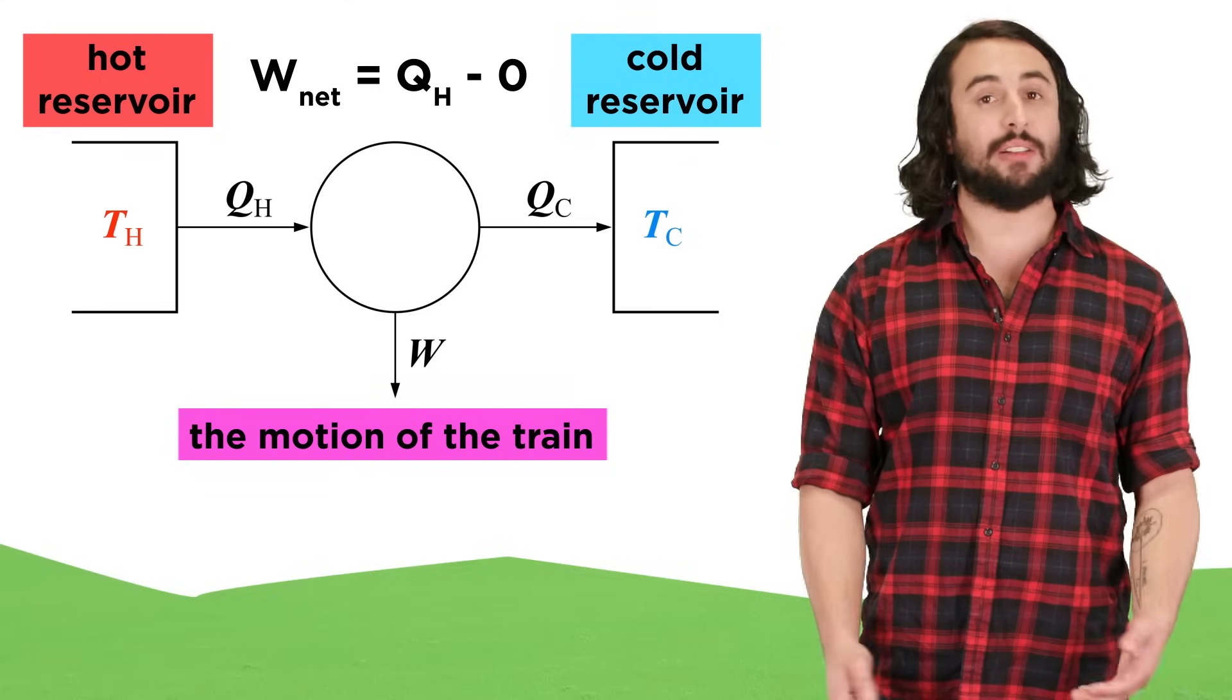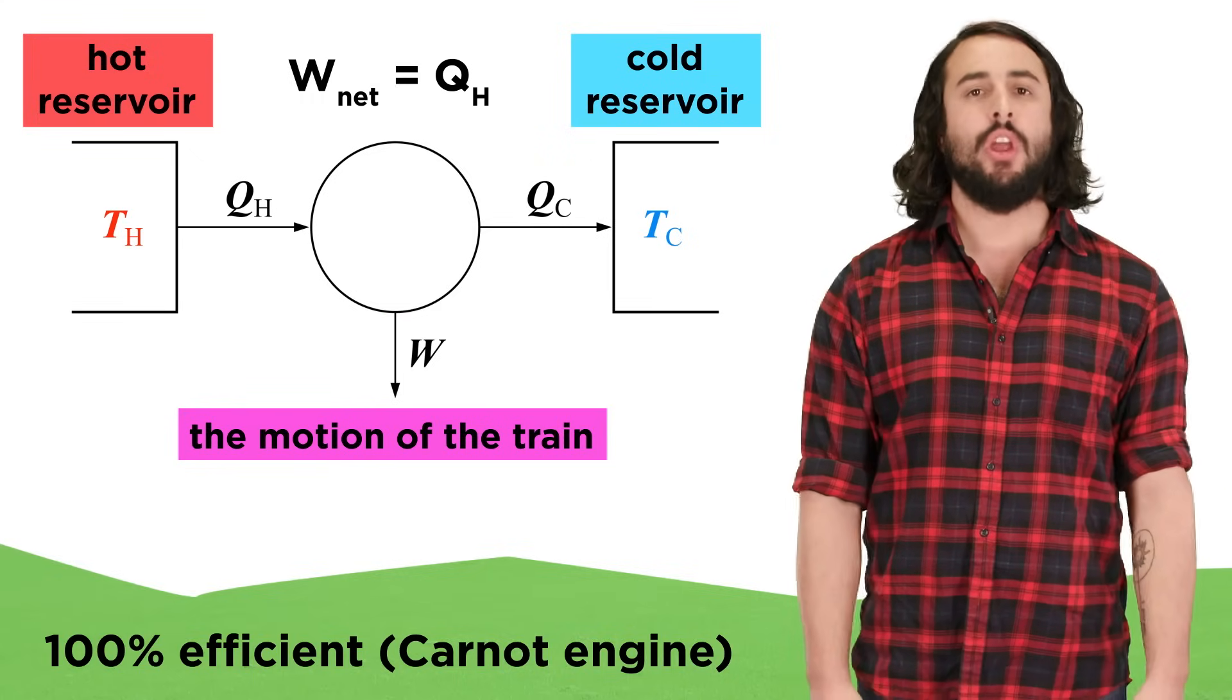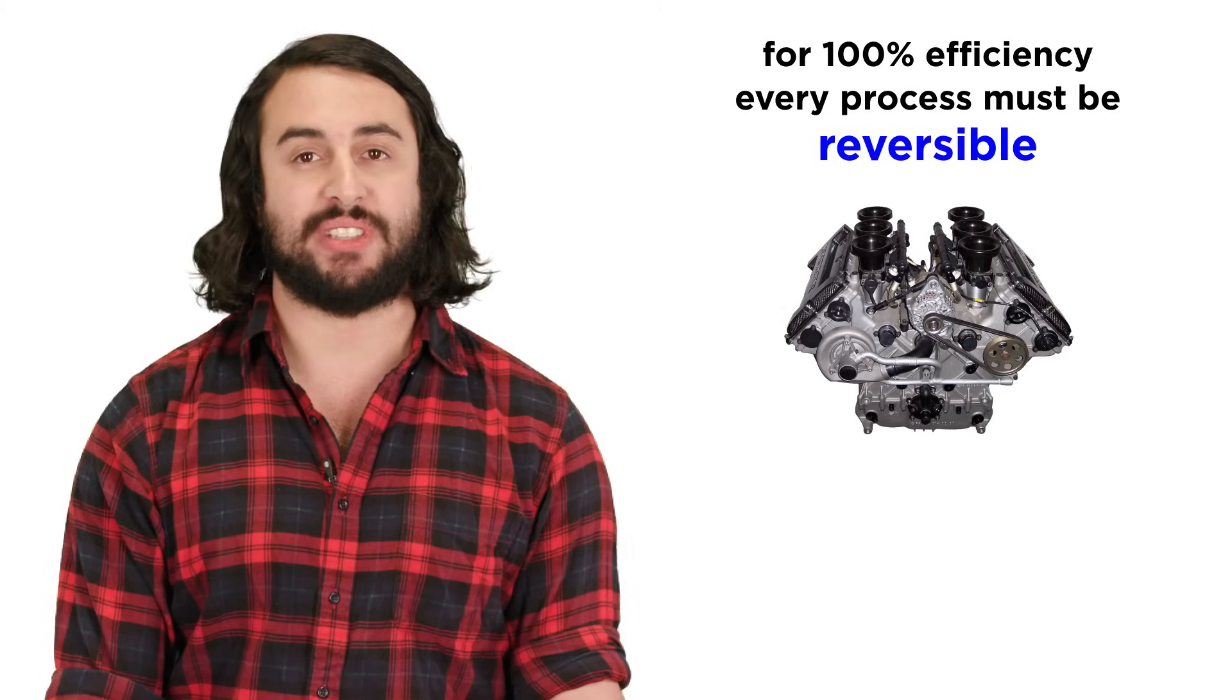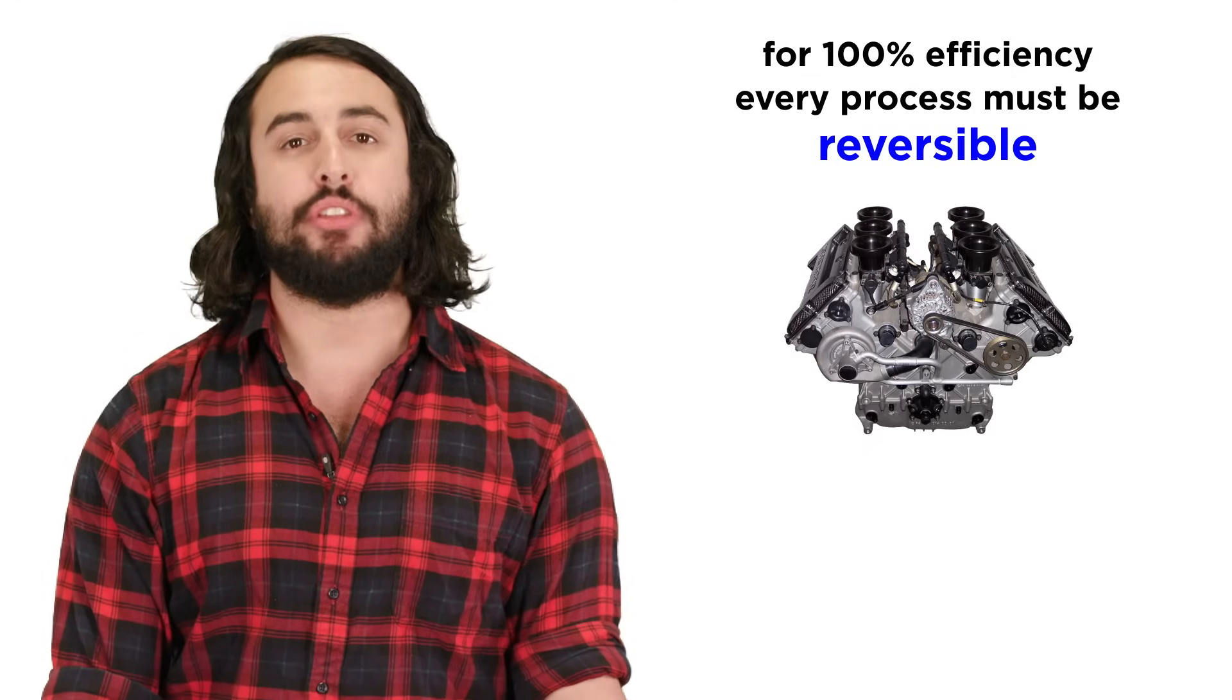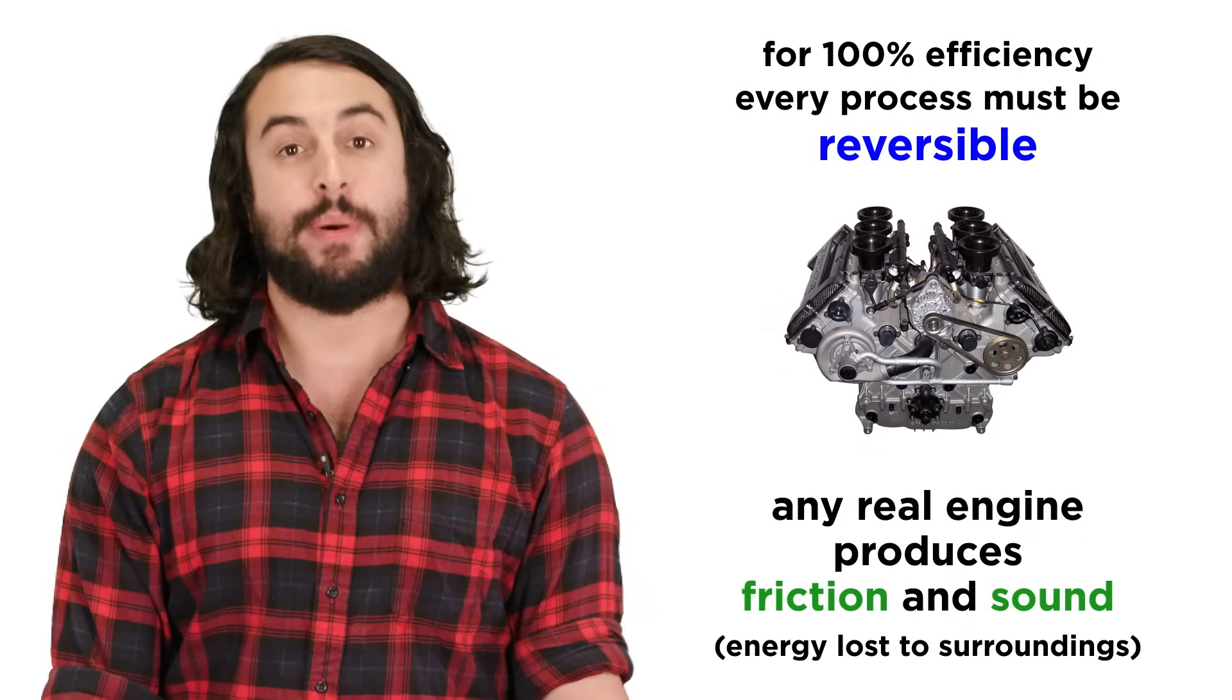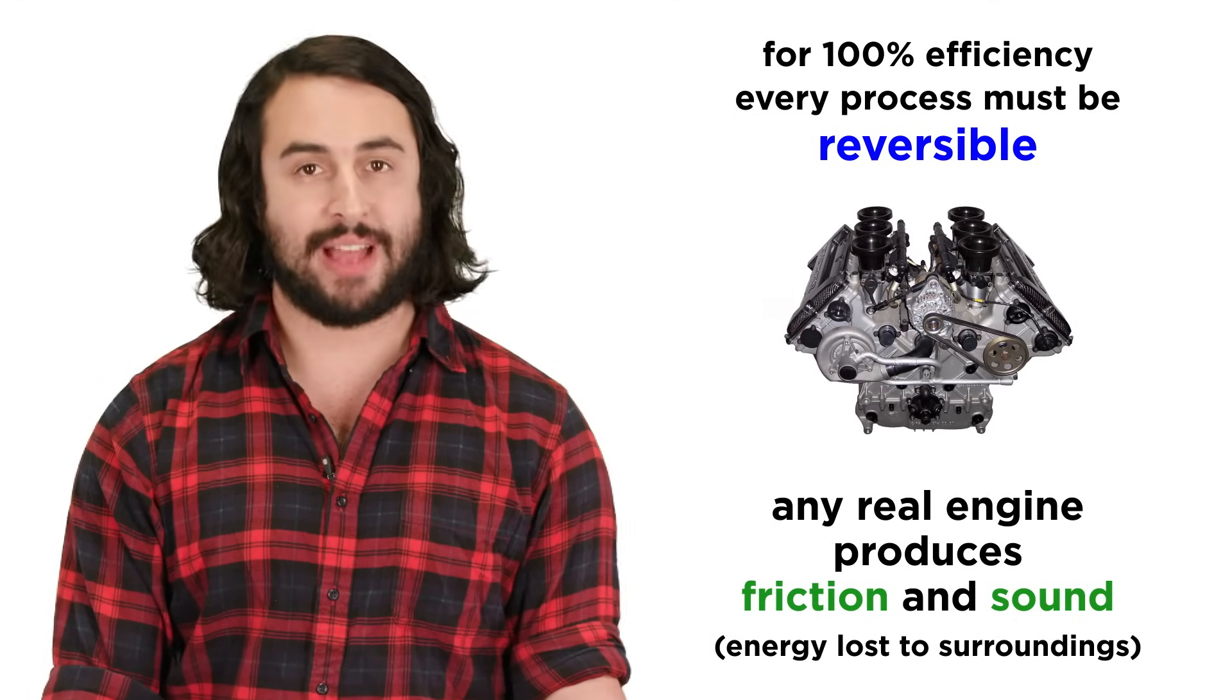If there was truly zero heat loss, we could say that all of the heat is transferred to work and the engine operates at 100 percent efficiency. Unfortunately, this is not physically possible for a number of reasons. First, the only way to achieve 100 percent efficiency would be if every process in the engine were completely reversible, meaning both the system and surroundings could return to their original states. This is known as Carnot's principle, but any real engine involves moving parts that produce friction and sound, so some energy must always be lost to the surroundings.